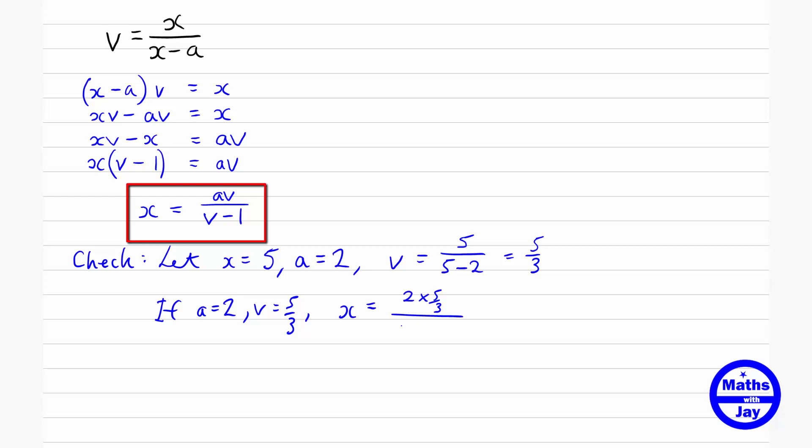And then the denominator will be v minus 1, so that's 5/3 minus 1. And the simplest way to work this out really is to multiply each term by 3, so that we've got 2 times 5 in the numerator and 5 minus 3 in the denominator. So 2 times 5 is 10, 5 minus 3 is 2, and that does come out to be 5, which we were expecting.